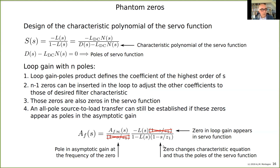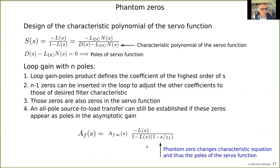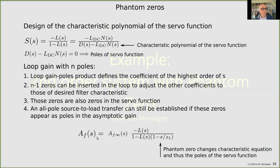It's like a phantom: it is there, you don't see it, and you see its effect on the change of the characteristic polynomial, but you don't see the zero in the transfer. That is the concept of a phantom zero — it changes the characteristic equation and thus the poles of the servo function, but it does not appear in the transfer from source to load itself.